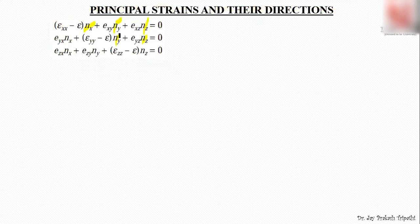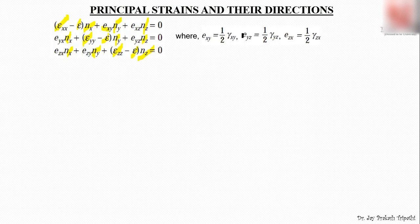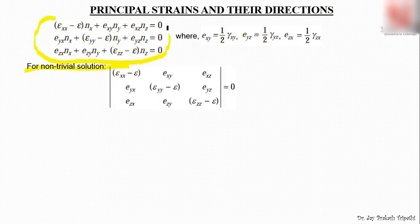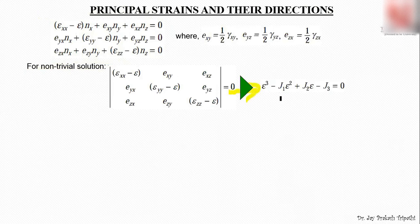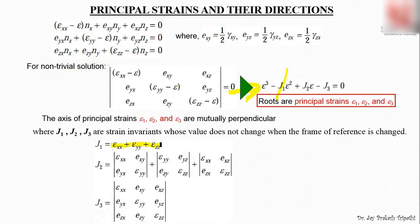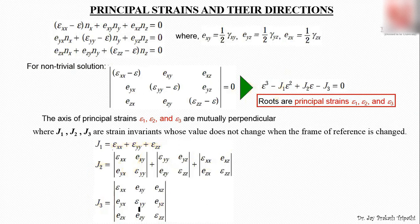In these equations, ε_xx represents strain in the x-direction; n_x, n_y, n_z are the direction cosines of the principal plane; and ε represents the principal strain. The terms e_xy = ½γ_xy, e_xz = ½γ_xz, and e_yz = ½γ_yz. For a non-trivial solution, the determinant of the coefficient matrix of this homogeneous equation must be zero. Taking the determinant gives a cubic equation with invariants J₁, J₂, and J₃.